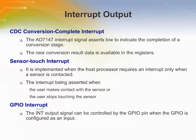The AD7147 has an interrupt output that triggers an interrupt service routine on the host processor. There are three types of interrupt events on the device: a CDC conversion complete interrupt, a sensor touch interrupt, and a GPIO interrupt. Each interrupt has enable and status registers. The conversion complete and sensor touch interrupts can be enabled on a per conversion stage basis. The status registers indicate what type of interrupt triggered the interrupt pin, and are cleared during a read operation.